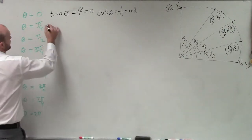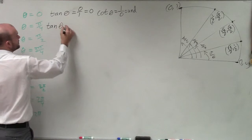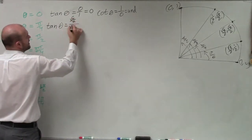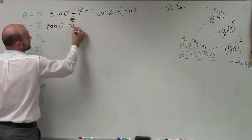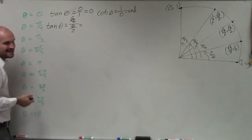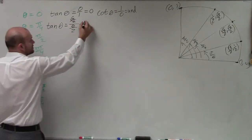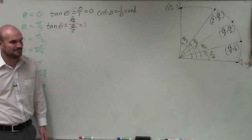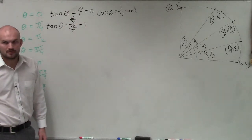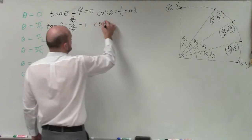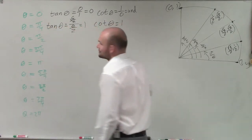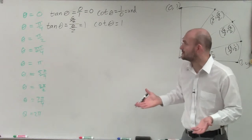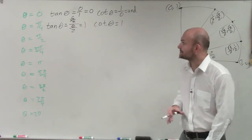Now let's look at pi over 4. The tangent of theta at pi over 4 is square root of 2 over 2 divided by square root of 2 over 2. Those are the exact same numbers, so that equals 1. If I reciprocate these for cotangent, it's going to be the exact same — the reciprocal of square root of 2 over 2 divided by square root of 2 over 2 is still 1.